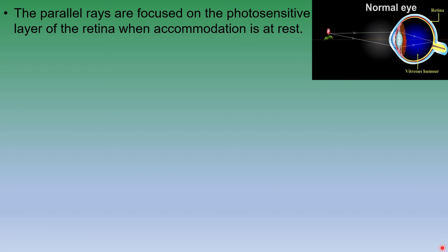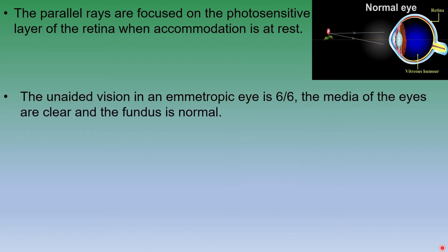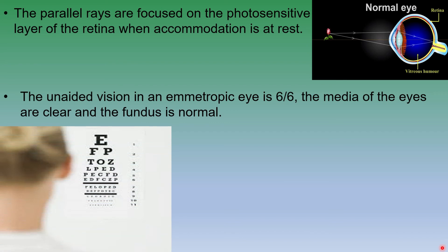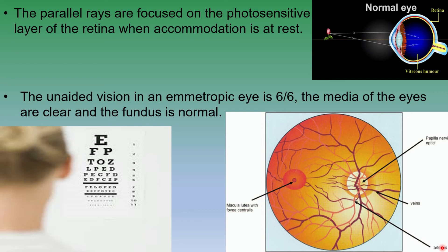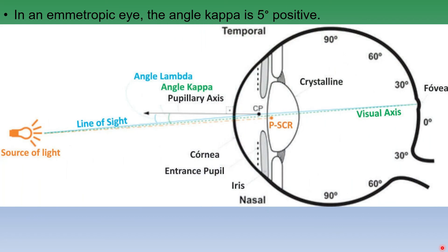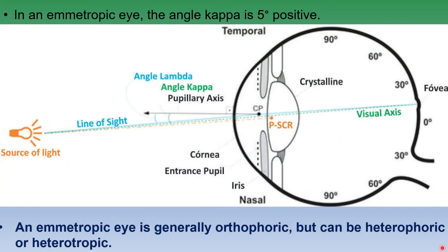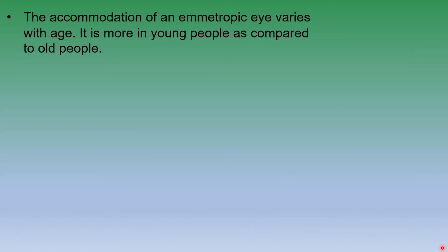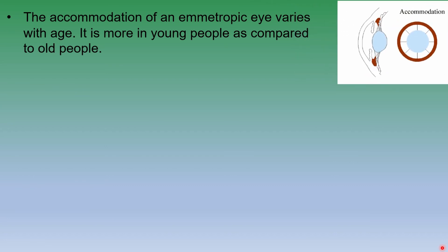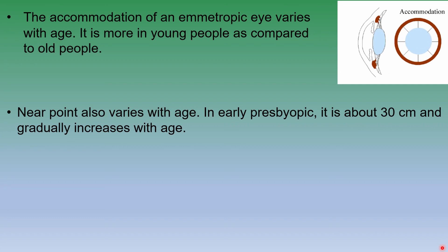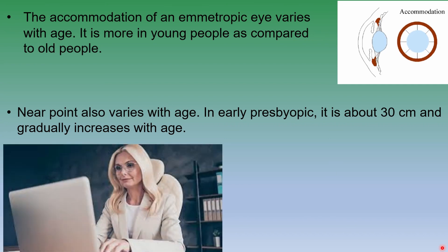The unaided values — meaning without any power and without refractive errors — vision should be 6/6. Media of the eye are clear and phakic status is normal in an emmetropic eye. In an emmetropic eye, the angle kappa is 5 degrees positive. An emmetropic eye is generally orthophoric but can also be heterophoric or heterotropic. The accommodation of an emmetropic eye varies according to age — it is more in young people compared to old people. Near point also varies with age; in early presbyopia it is about 30 cm and gradually increases with age.